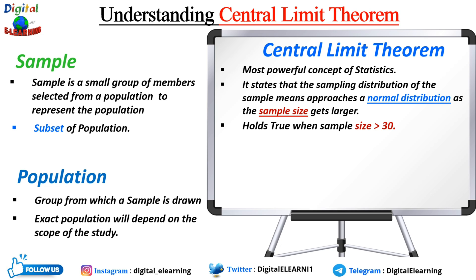This fact holds especially true when the sample size is greater than 30. As we increase the number of samples from 30 to 50 to 100, the graph of sample means will move toward a normal distribution. When n is less than 30, the central limit theorem does not apply and the sampling distribution follows the population distribution — it will only be normal if the population is also normal. When n is greater than or equal to 30, the central limit theorem applies and the sampling distribution will approximately follow a normal distribution.